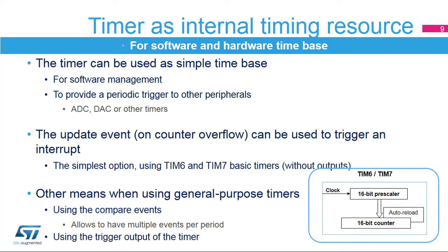The simplest use case for a timer is to provide an internal time base. This is commonly used by software routines to provide periodic interrupts or single-shot timeout protection. The timer can also provide periodic triggers to other on-chip peripherals such as the ADC, DAC, and other timers. The update event, typically on counter overflow, is the usual means to have a software time base interrupt or trigger a periodic event. The basic timers TIM6 and TIM7 are best suited for such tasks. It is also possible to generate multiple timing events with a single timer using multiple compare channels.